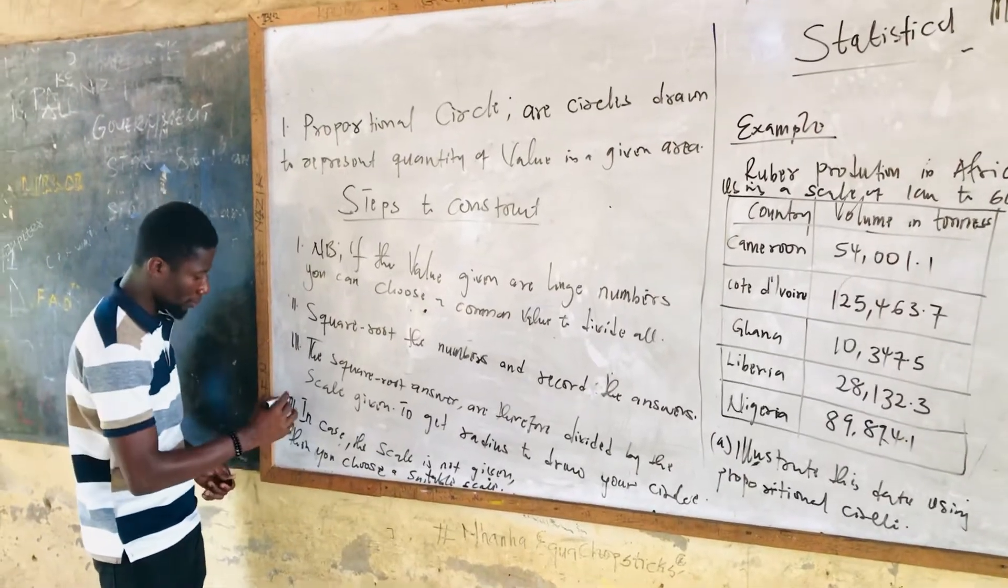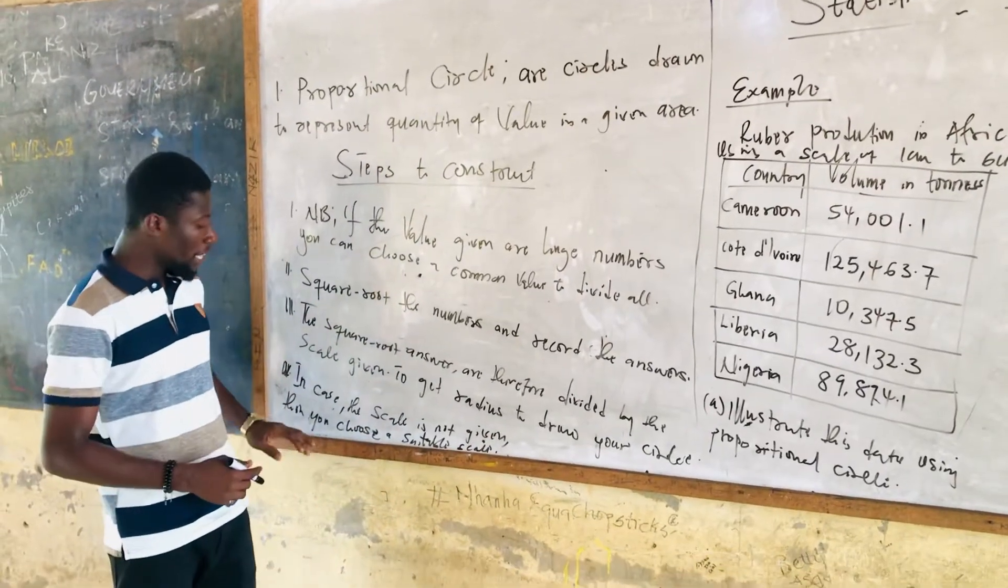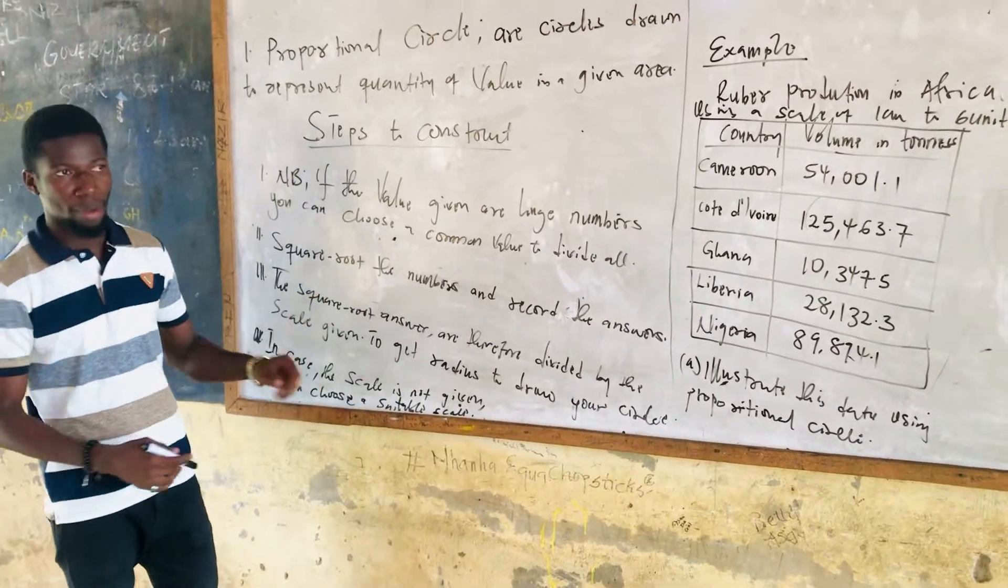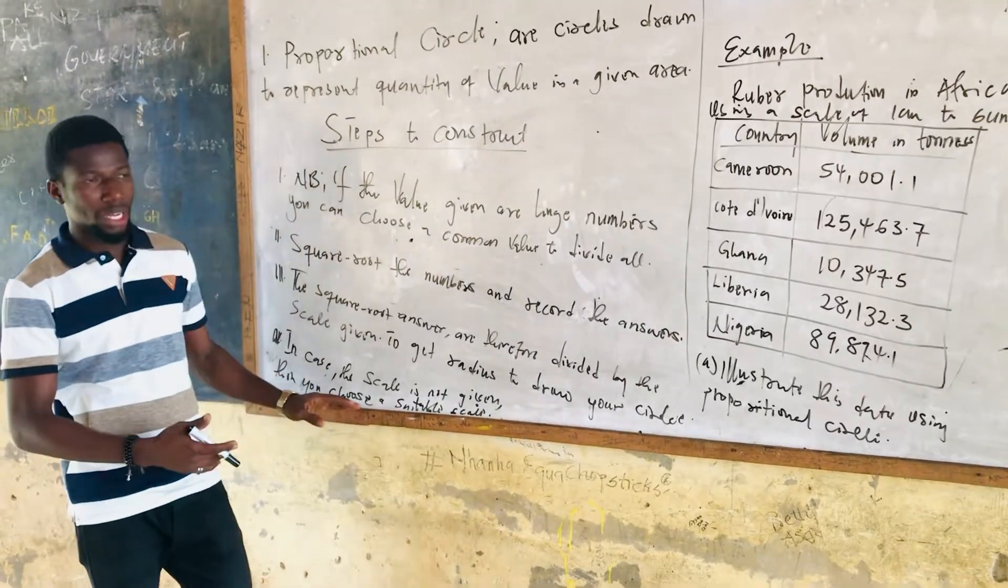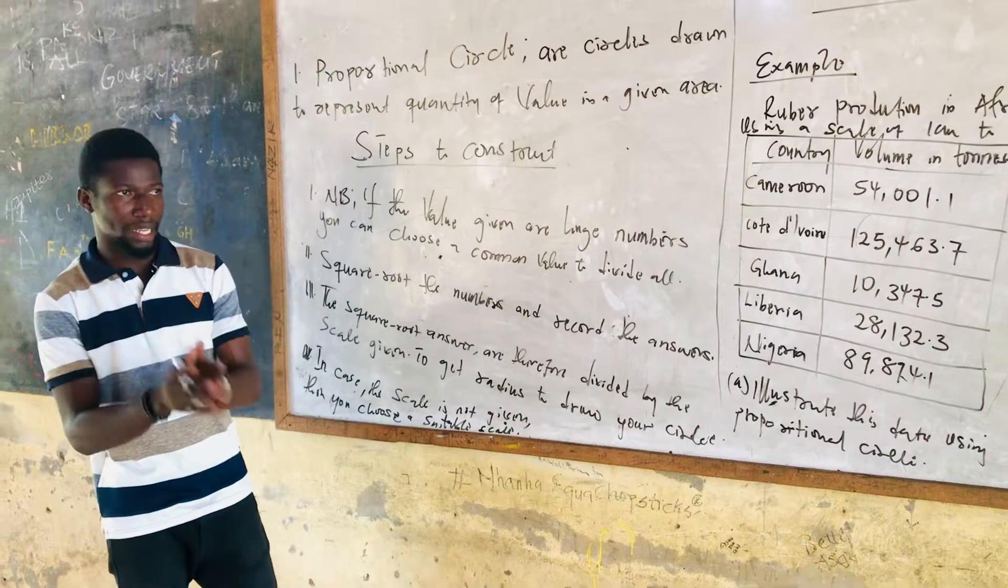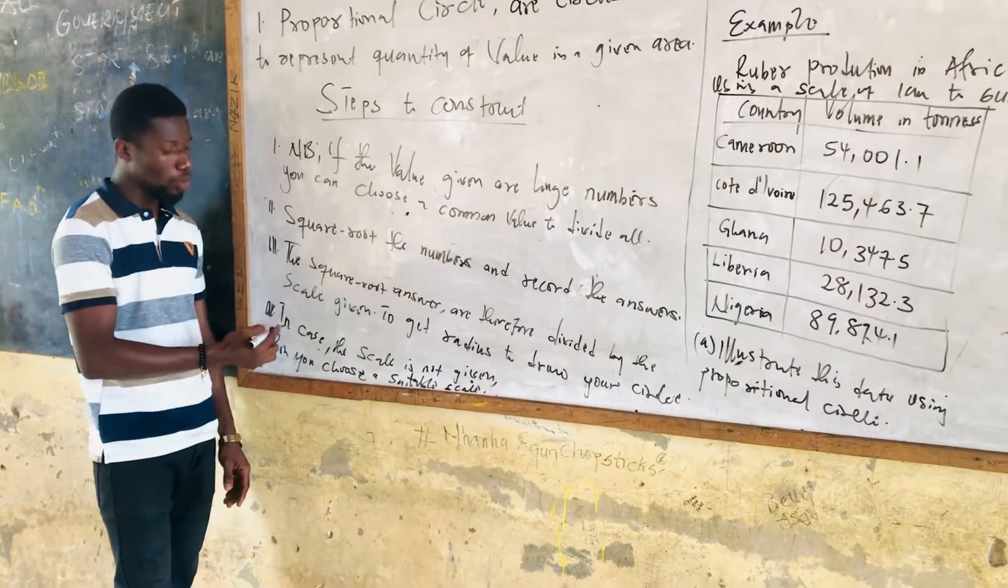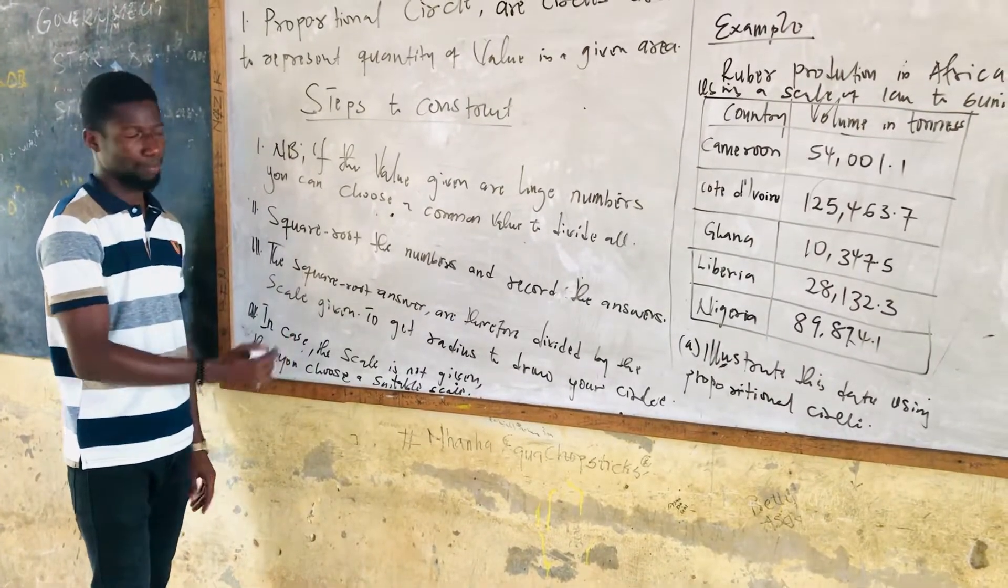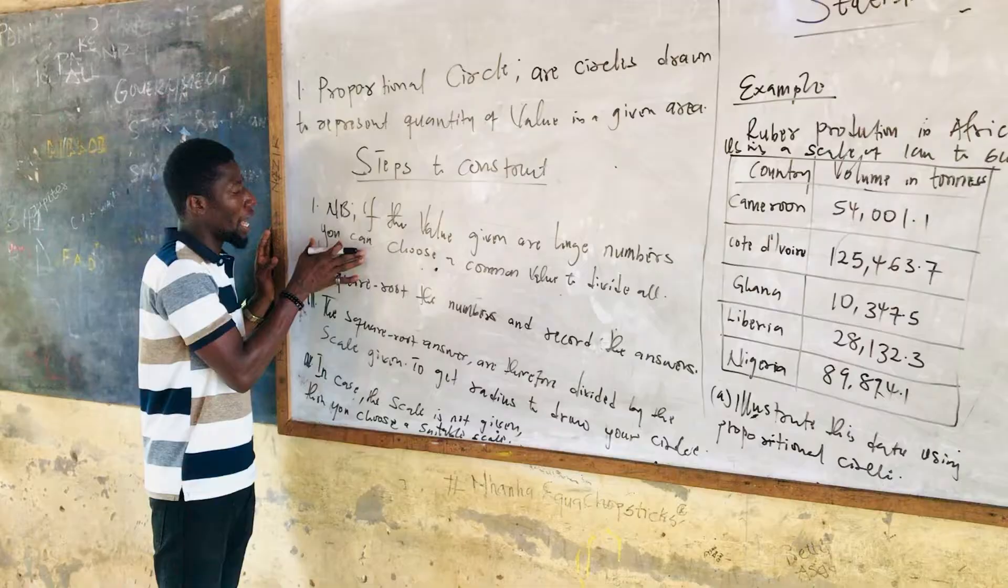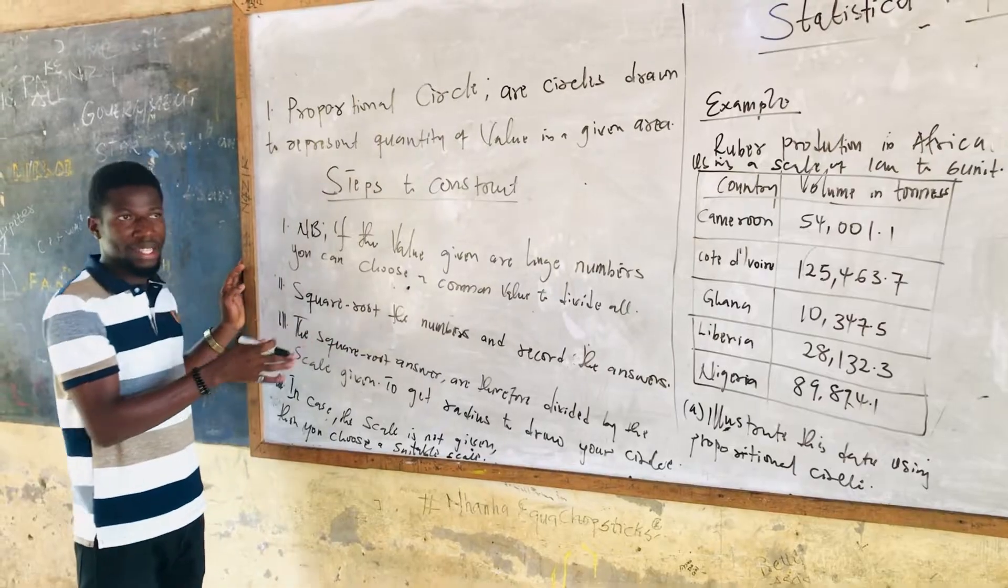In step four, note: in case the scale is not given in the question, then you need to choose your scale to work. When the numbers given to you in the exams are not huge, then step one is not applicable. You can skip step one and go straight to step two.